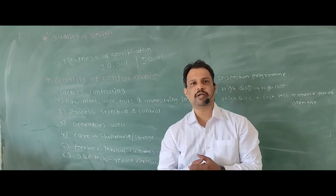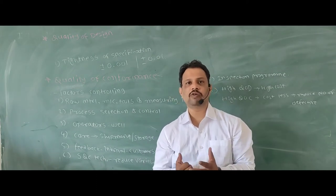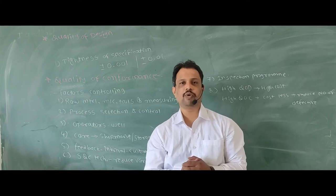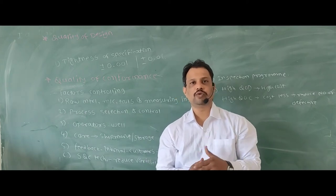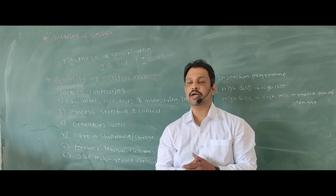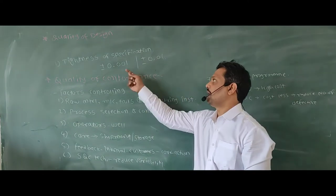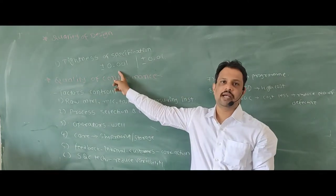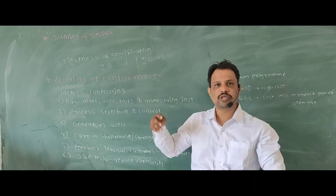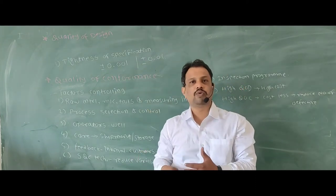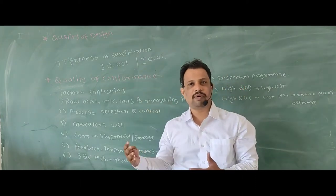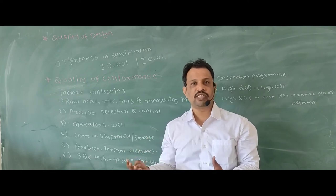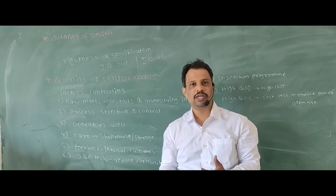We will see that quality of design means what - tightness of specification. I will show you the example of tolerance of .001 and the other part is the tolerance of .01. This tolerance is the tighter one. Then the factors of your customer - customer based, which is the profit consideration, environmental conditions.